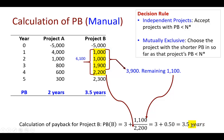What if these projects are independent? Independent projects means the two have nothing in common — for example, a firm considering purchasing a truck and separately investing in a warehouse. In that case, we accept any project as long as the payback period is below the threshold. If the firm has a threshold of four years, both projects would be accepted. If the threshold is less than two years, neither would qualify.